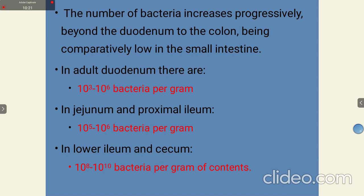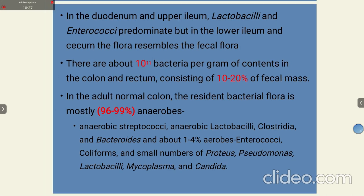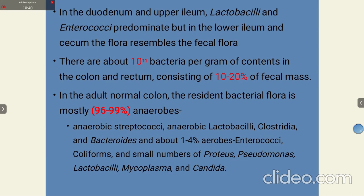The number of bacteria increases progressively beyond the duodenum to the colon. In the adult duodenum, there are almost 10³ to 10⁶ bacteria per gram. In the jejunum and proximal ileum, this number varies from 10⁵ to 10⁶ bacteria per gram, while in the lower ileum and cecum it increases to 10⁶ bacteria per gram. In the adult normal colon, the resident bacterial flora is mostly 96 to 99% anaerobes — mainly streptococci, anaerobic Lactobacilli, Clostridia, and Bacteroides — about 1 to 4%. Aerobes include Enterococci, coliforms, Proteus, Pseudomonas, Lactobacillus, Mycoplasma, and Candida.